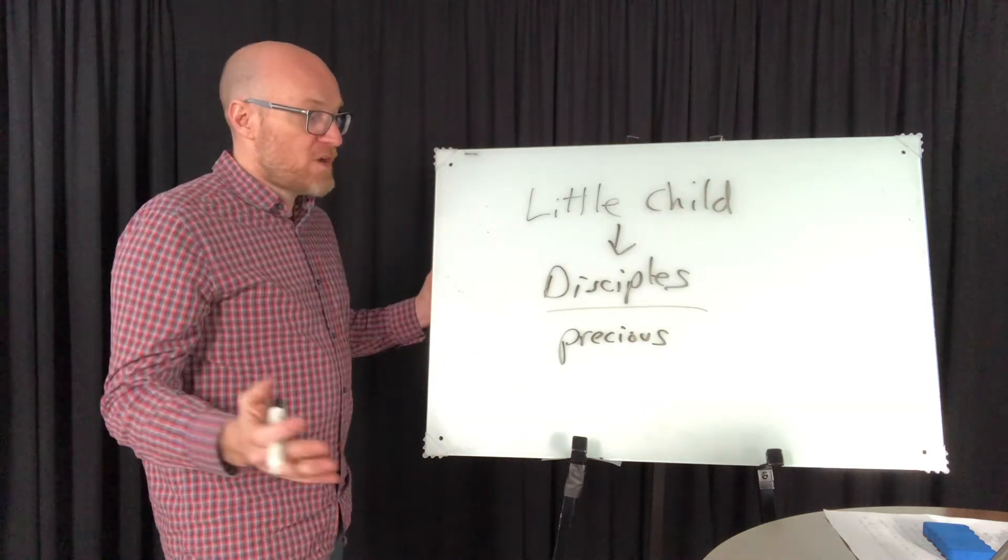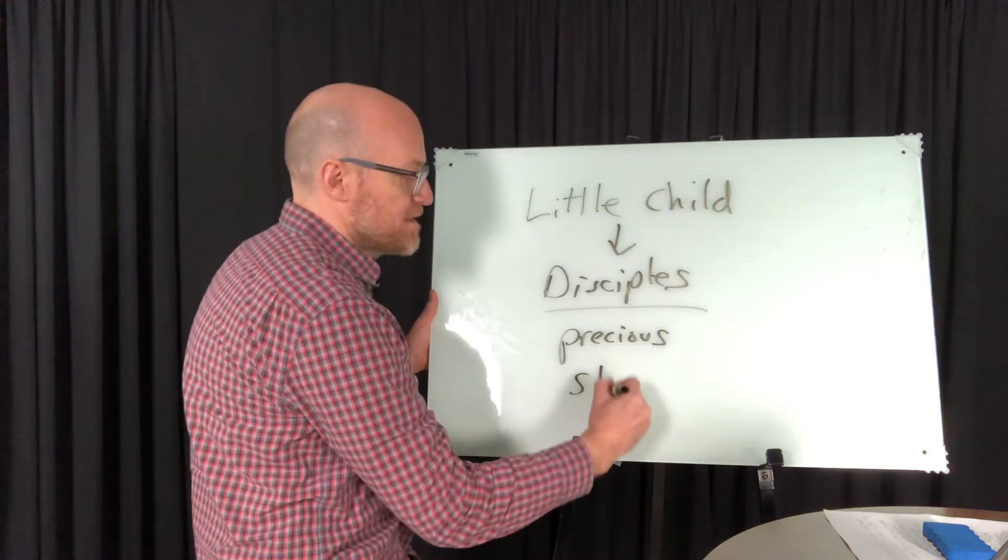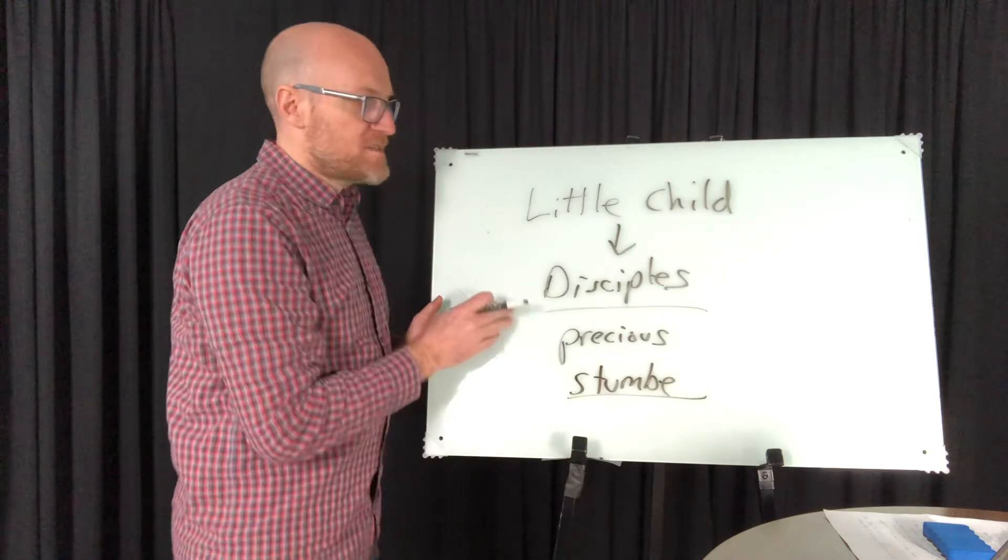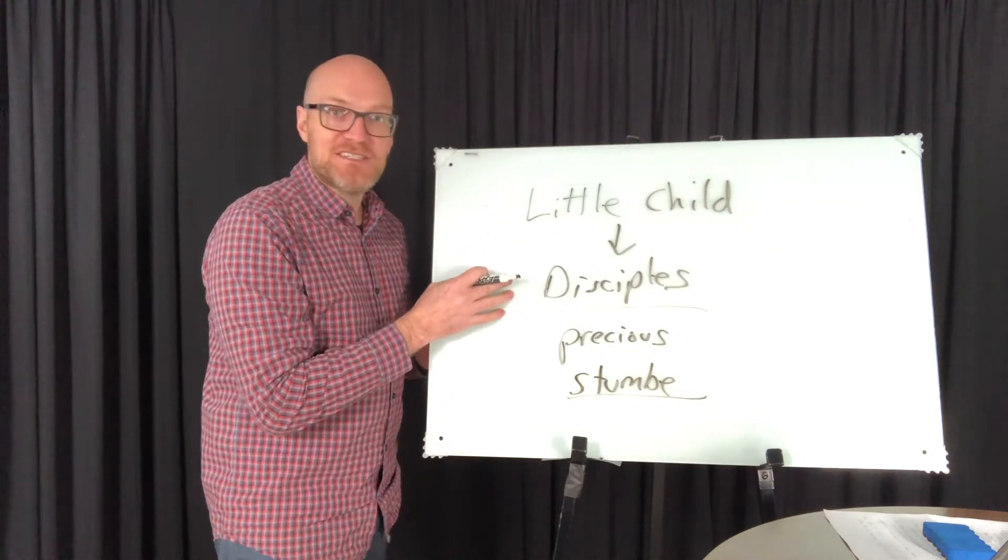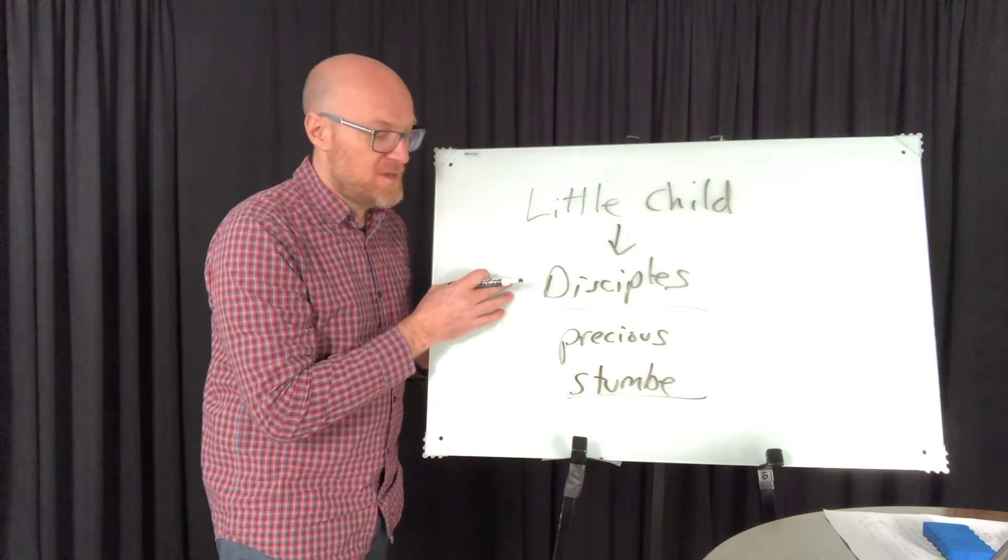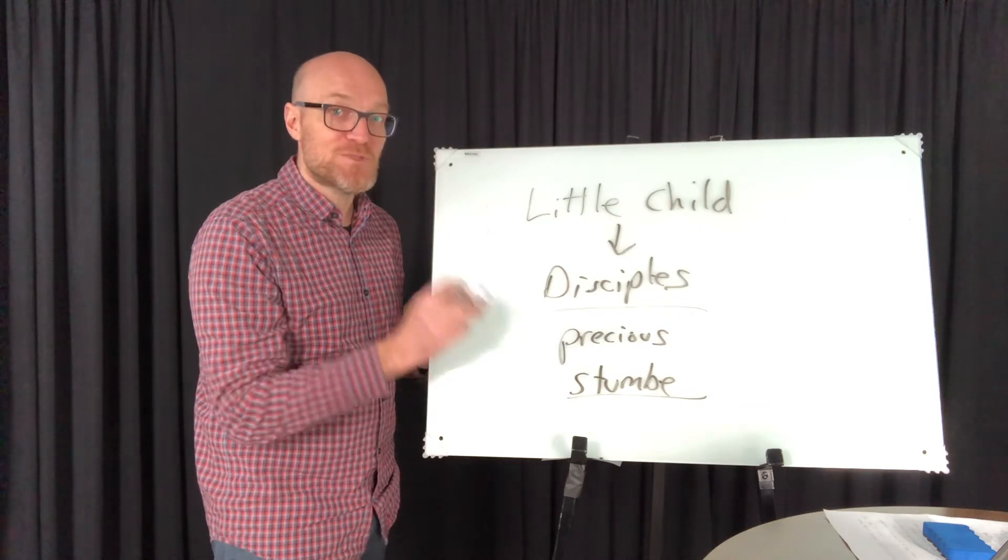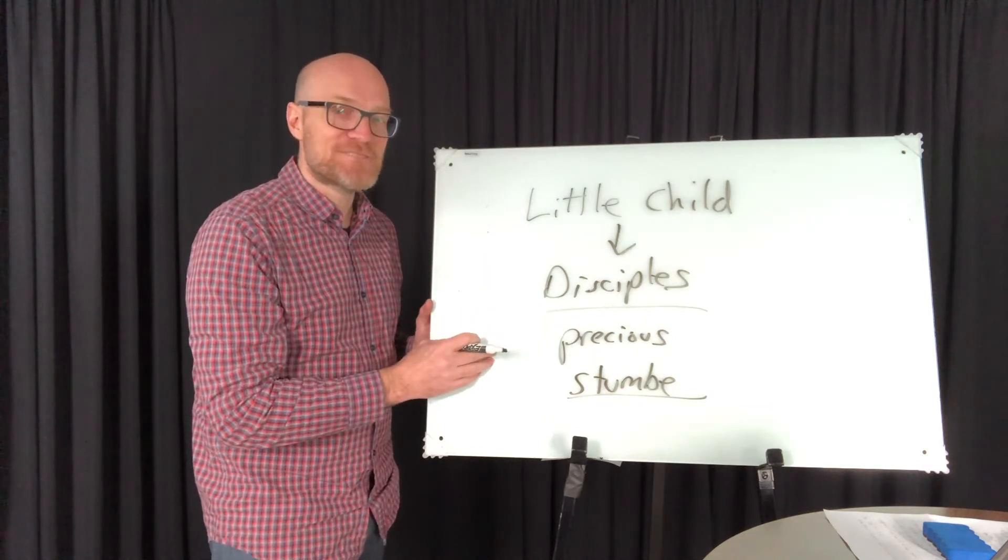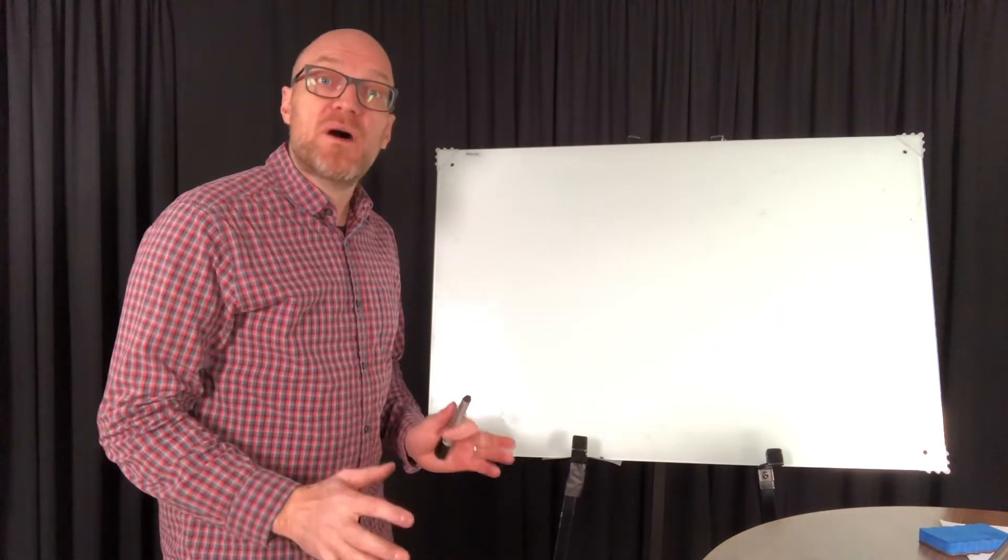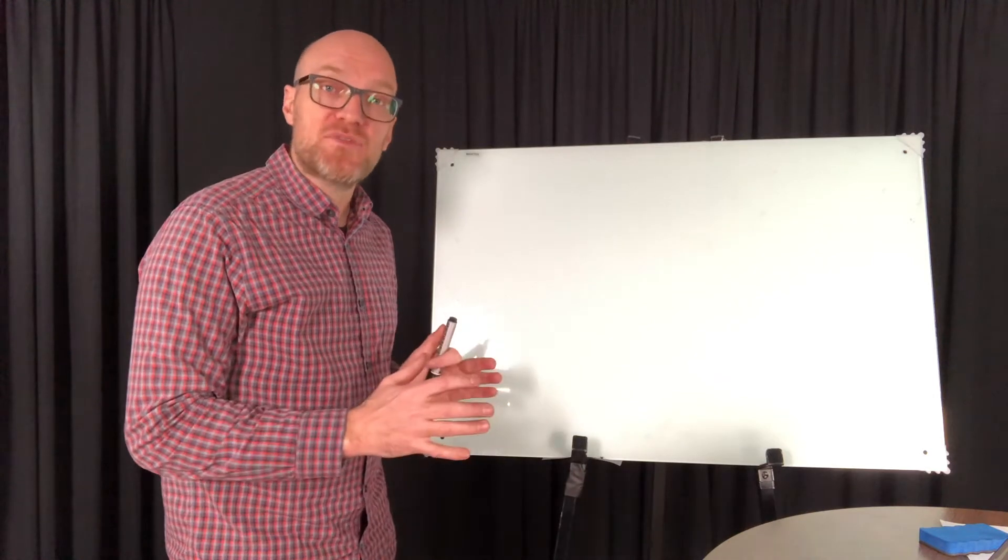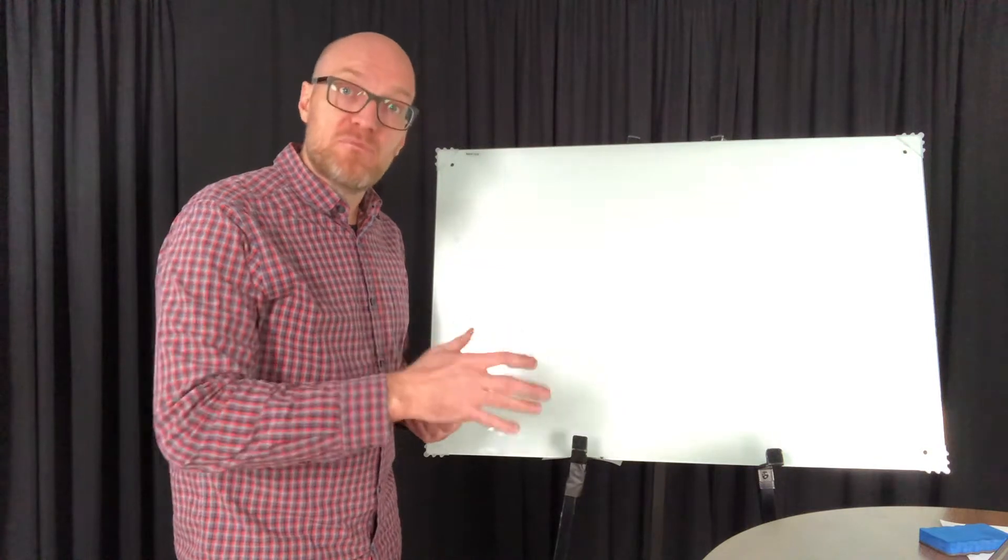We've been looking at verse 5, which continues to say, anyone who welcomes a little child like this, a disciple of Jesus, on my behalf is welcoming me. But if you cause one of these little ones to stumble, well, that is the shift between the positive side of welcoming a disciple that's on a mission to serve Jesus is to welcome Jesus himself, but to cause one to stumble is a very serious offense. We will see how serious now as we look at verse 6.